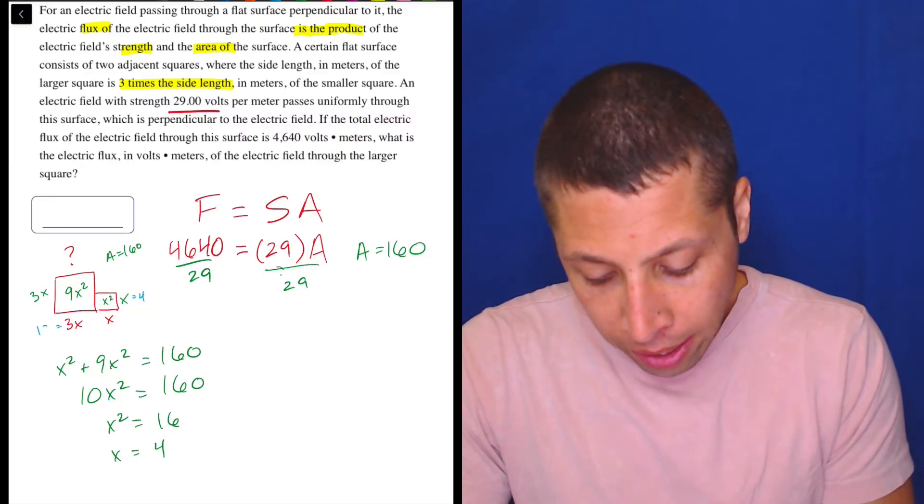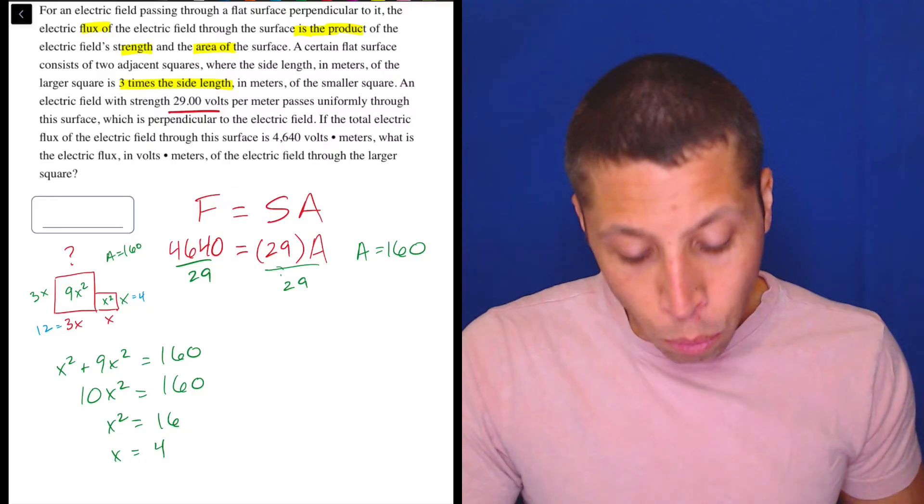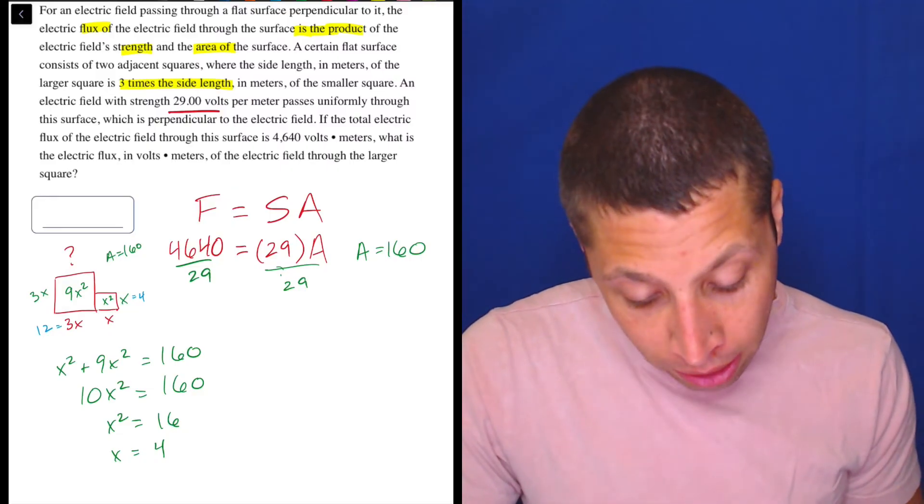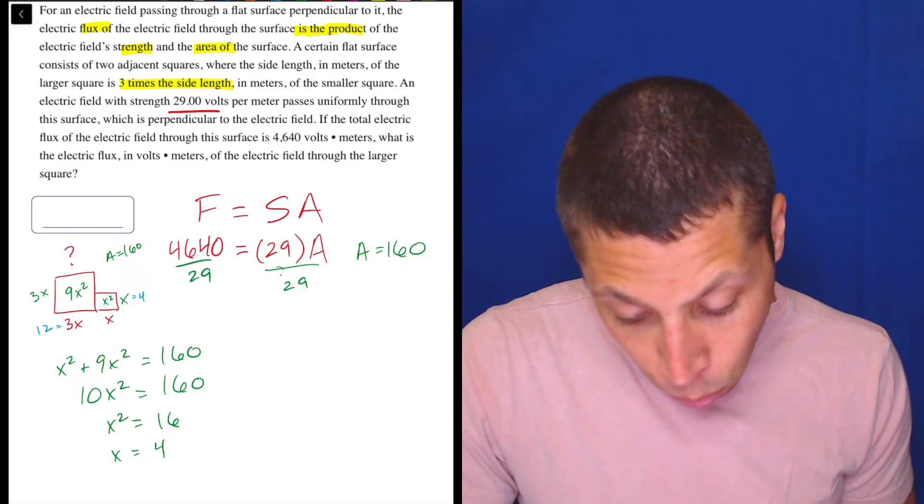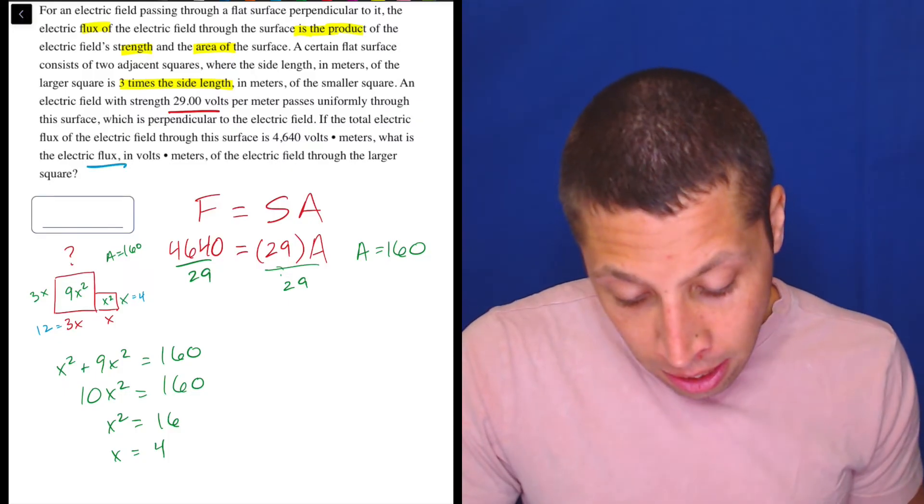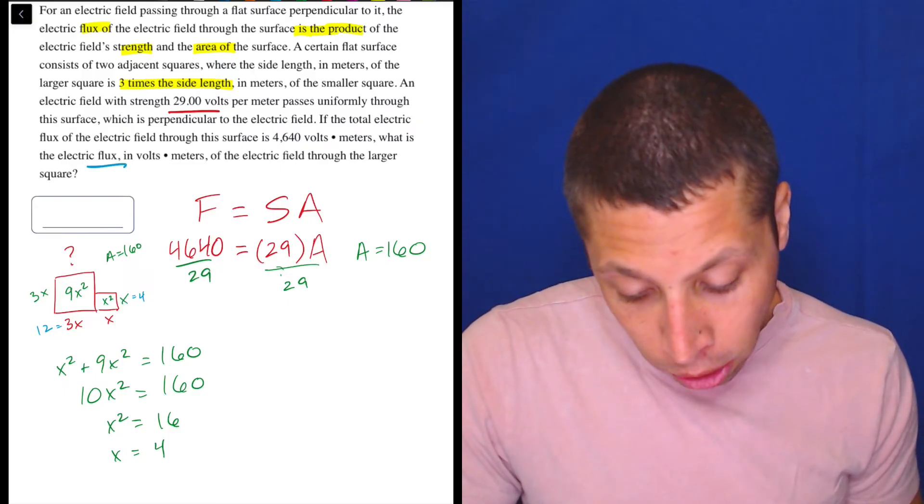The area of the big square then is 12 by 12. Well, what did they want again? They wanted the area, something about the big square. What is the electric flux of the electric field through the larger square?